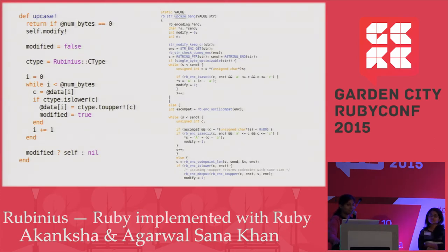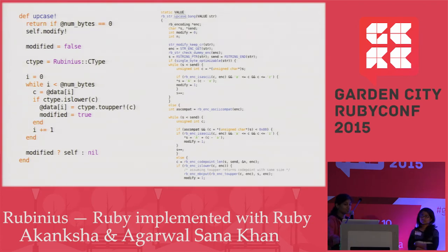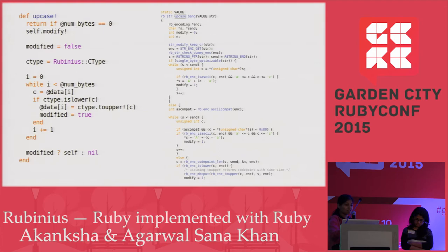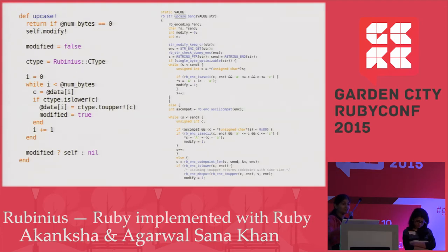On the right-hand side you can see the upcase function in MRI, which is in C and is quite difficult to understand due to a lot of macros and low-level encoding. So here it was comparatively easier to learn Ruby internals.